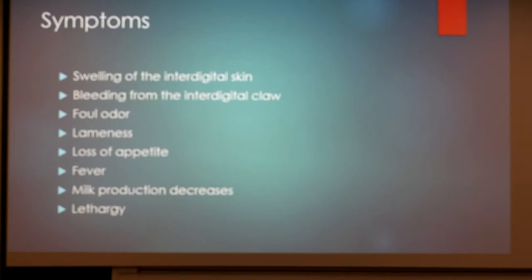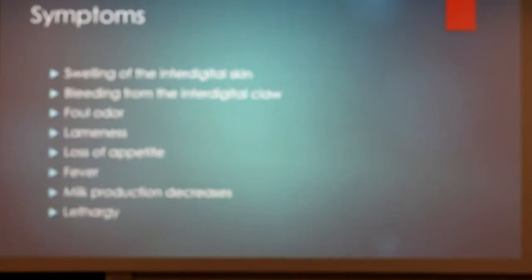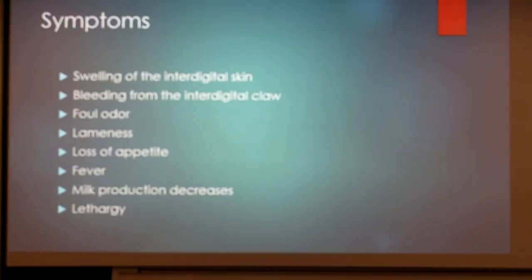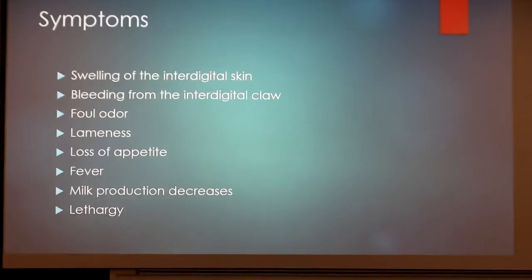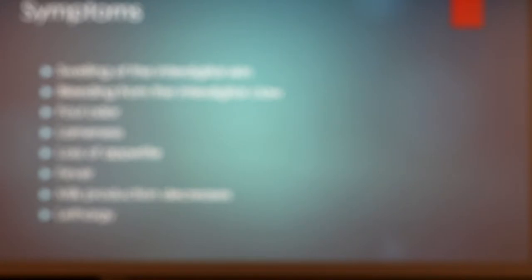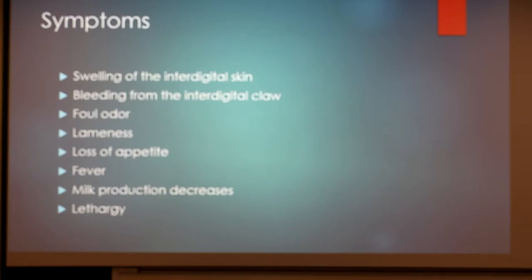Here are some major symptoms. The main one is swelling of the inner digital skin — that's what you saw in the veterinarian's picture. Then bleeding of the inner digital claw; when you're out checking cattle you can't see the bottom of their hooves, so you'll see bleeding on the claw rather than from the inner digital skin directly. Other symptoms include foul odor — a telltale sign — lameness as shown in that picture of the cow limping, loss of appetite, fever, decreased milk production, and lethargy.